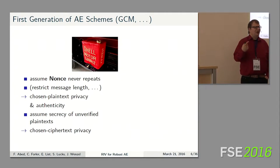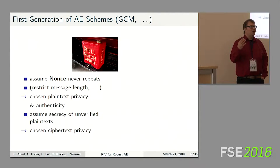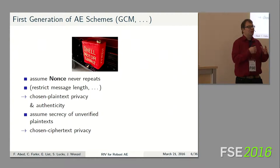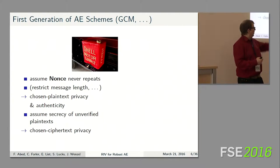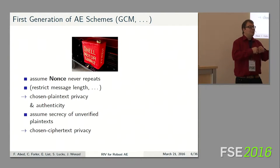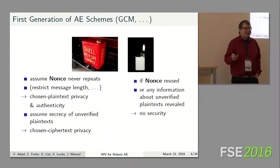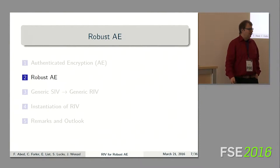The second assumption is that unverified plaintexts are thrown away and no information whatsoever leaks about them. When we look at schemes from the early 2000s, they seemed to do exactly what we wanted: pretty strong, pretty fast. But whenever you actually violate one of these assumptions, all your security is gone. This is why we may need robust authenticated encryption.